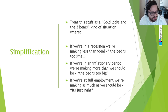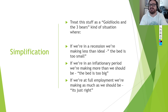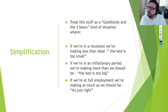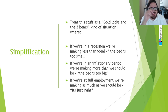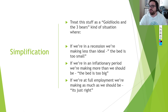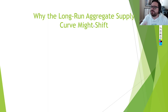Those are the three scenarios, and here's a helpful metaphor: Goldilocks and the Three Bears. If we are in a recession, we're making less than ideal — the economy is too small, production is below where it should be, and SRAS and AD are to the left of LRAS. If we're in an inflationary period, we're producing way more than we should — the bed is too big. And if we're at full employment, it's just right.